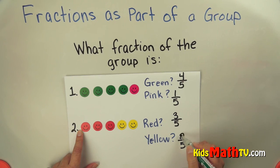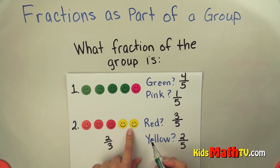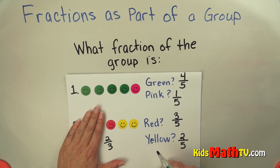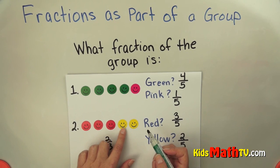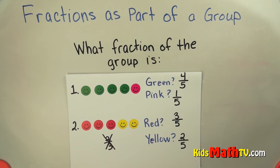Remember, your numerator or top number is always how many you're looking for - in this case, yellow is two. The bottom number is always the total in the whole group. Some students would put two over three for yellow, but two over three is not correct. This group here would be two out of three, but two out of five is the correct answer.